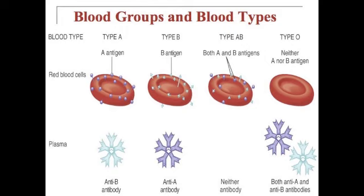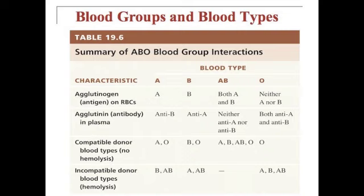Figure 19.14 on page 720 goes through the various blood groups, blood types, and how their antigens may appear. Table 19.6, also on page 720, shows a summary of the ABO blood group interactions, which can also be extrapolated to the Rh factor. Study this table on your own time.